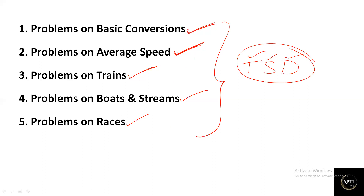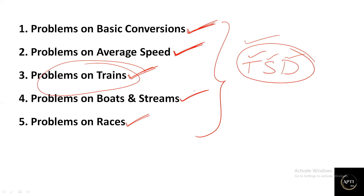Without knowing the fundamentals, if you directly jump to problems on trains, you will find it difficult to solve them. So first go with fundamentals, then average speed, then trains, then boats and streams, and finally races. There are very few questions asked from races, but all five concepts together complete the topic of Time, Speed and Distance.